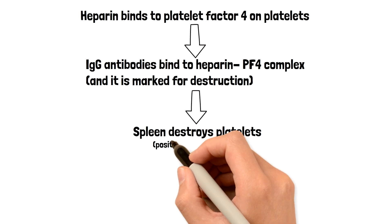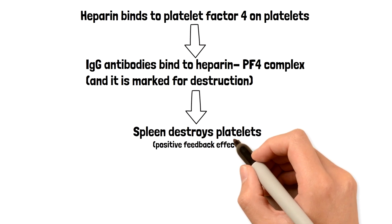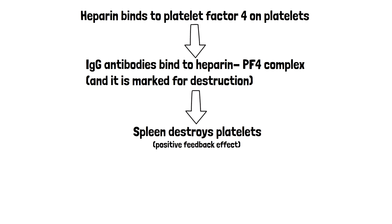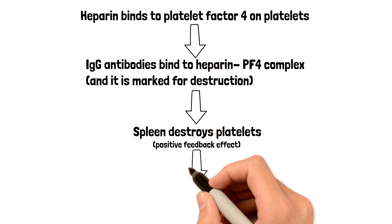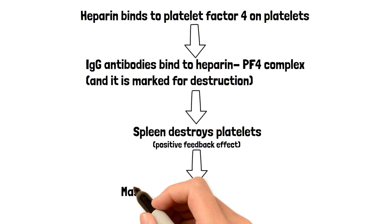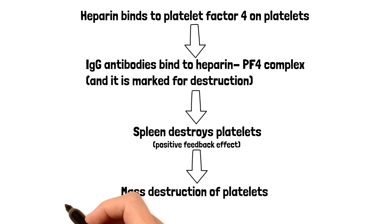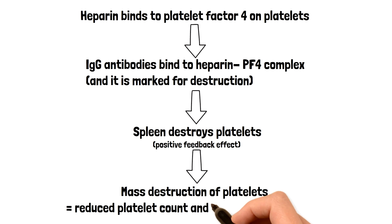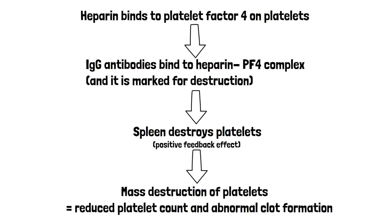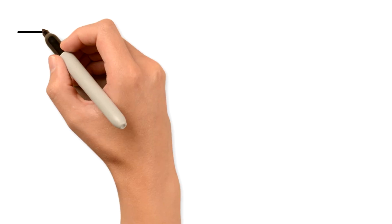This is a positive feedback effect too. The more platelet complexes that get destroyed, the more IgG antibody binding happens, and the more destruction happens — it's a positive feedback effect. As a result, you're going to have mass destruction of platelets and a reduced platelet count. And paradoxically, you're going to have abnormal clot formation because of these platelets being activated and then destroyed, so you're going to have arterial thromboses and venous thromboses.